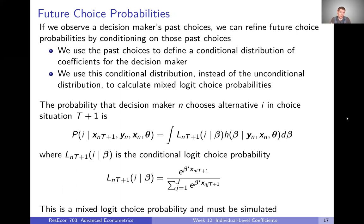Another application of conditional distributions is thinking about future choice probabilities. Suppose we observe a lot of past choices that a decision maker has made — we can then refine the choice probabilities we assign to that individual in the future by conditioning on what they've done in the past. The basic idea is to use those past choices to define a conditional distribution of coefficients for the decision maker and others like them — those who would make the same choices in the same choice settings.